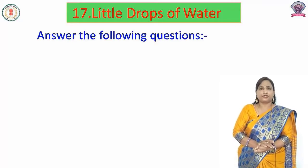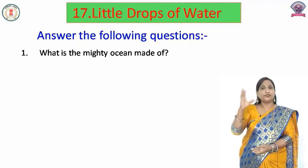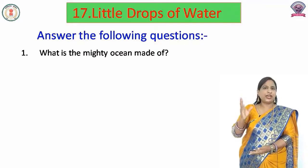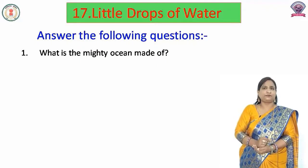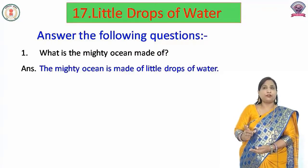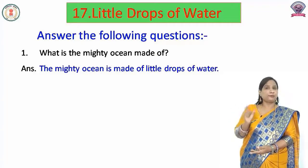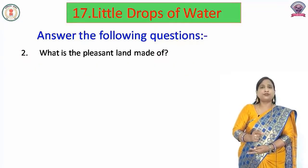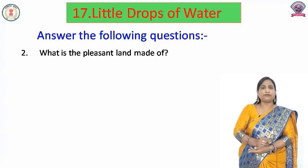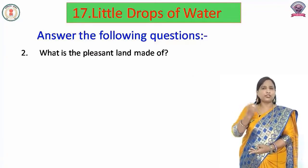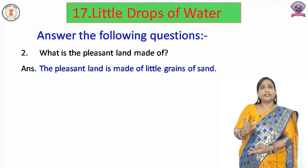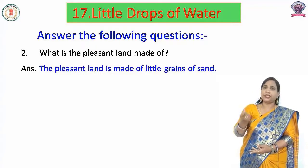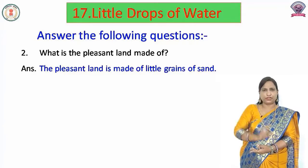Answer the following questions. What is the mighty ocean made of? Vishal mahasagar jo hai, woh kis se bana? The mighty ocean is made of little drops of water. To vishal mahasagar pani ki chhoti chhoti drops se mil kar bana. Question two: What is the pleasant land made of? Pleasant land jo hai, woh kis se bana? The pleasant land is made of the little grains of sand. Ret ke chhoti chhoti khano se mil kar bana.